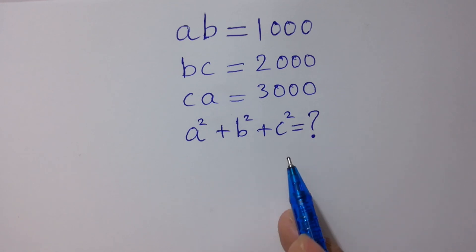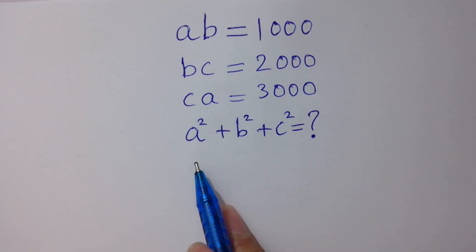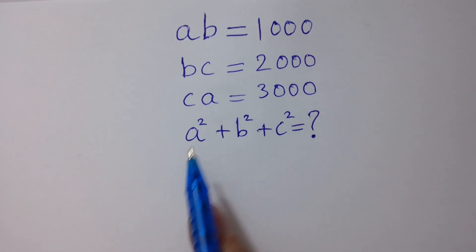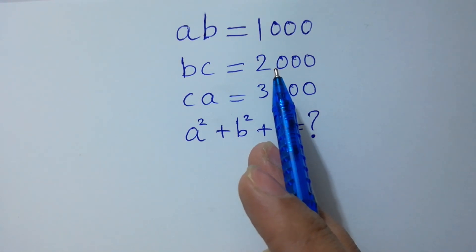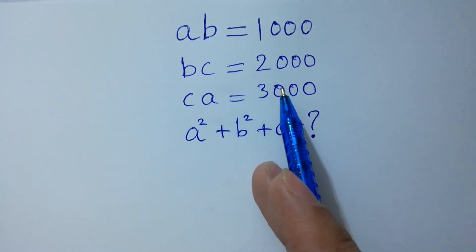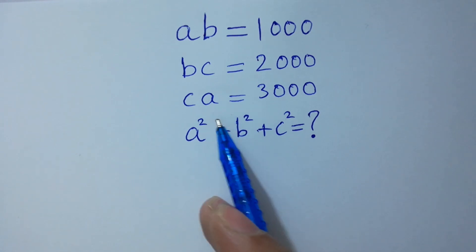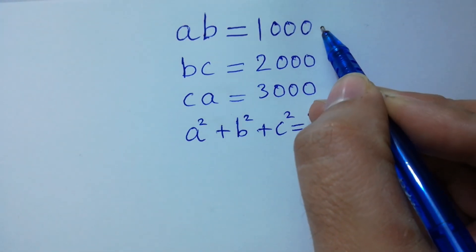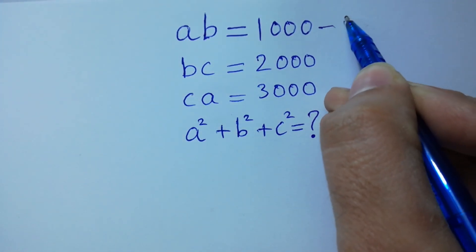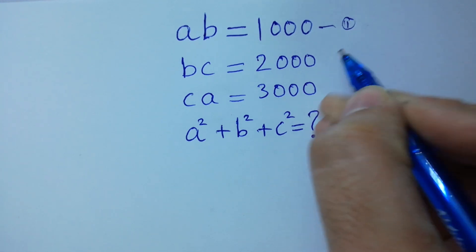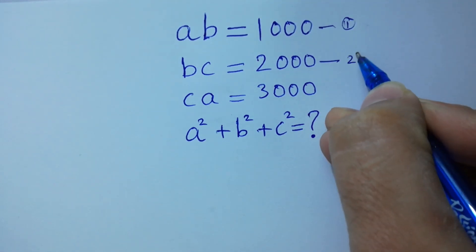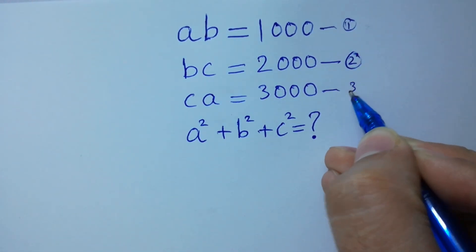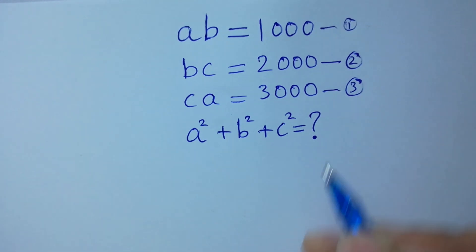Hello friends. Find the value of A squared plus B squared plus C squared, given AB equal to 1000, BC equal to 2000, and CA equal to 3000. Let AB equal to 1000 be the first equation, BC equal to 2000 be the second equation, and CA equal to 3000 be the third equation. Let's have a solution.